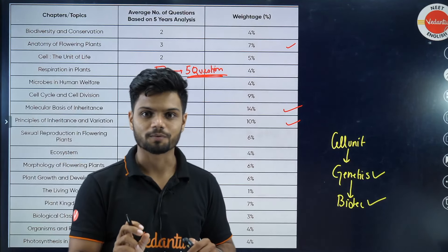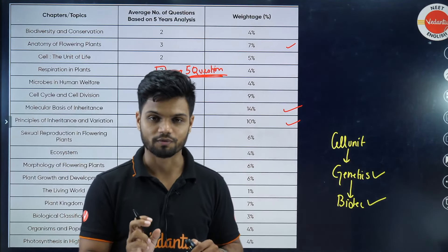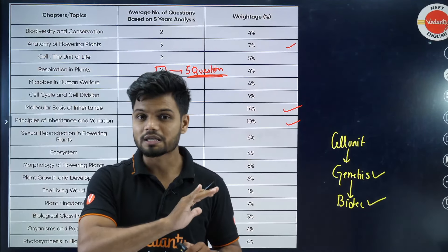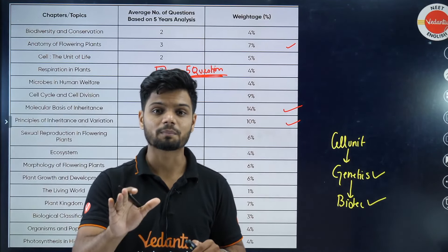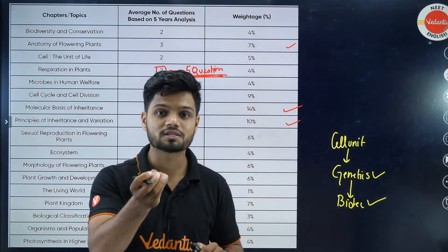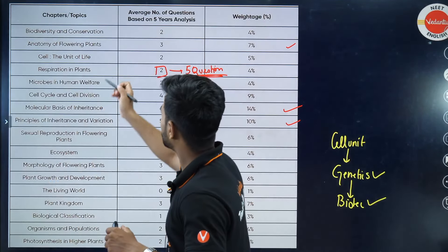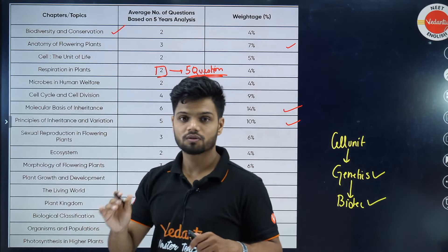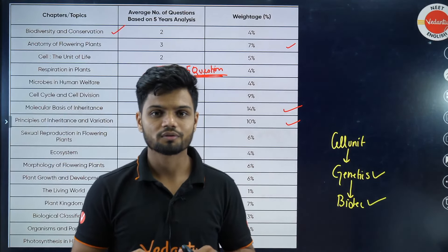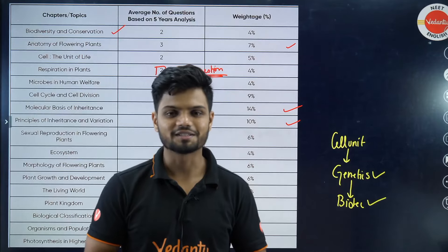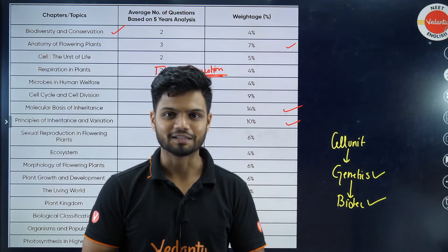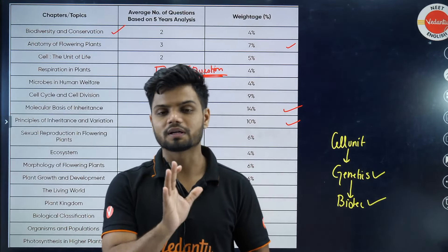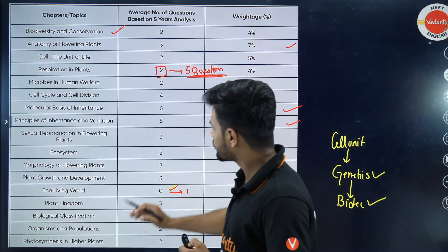Ecology you can do towards the very end, but it is important — very important. You cannot skip any chapter, because from Ecology alone, Biodiversity and Conservation gives four questions. That is the hard reality, so you can expect a lot of questions even from the Biodiversity chapter.